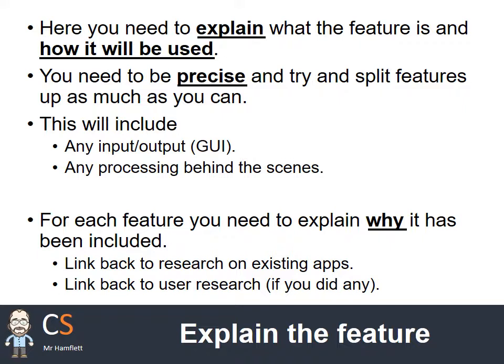For each feature you need to explain why it's been included, linking back to research on existing applications and user research. User research is interesting — you don't necessarily always have to do it, but sometimes features are really hard to justify. An easy way of getting that justification is to do a bit of user research, ask your users which features they think are most important, do a few little graphs and a little bit of analysis, and there's your justification. So you might find when writing this section that you actually need to do some user research to back up your justifications.